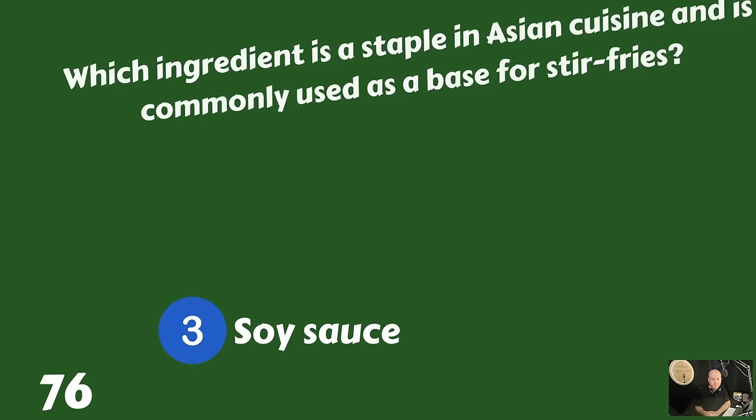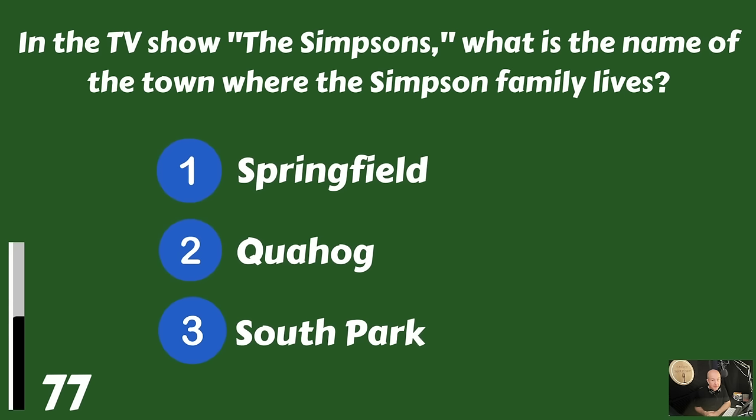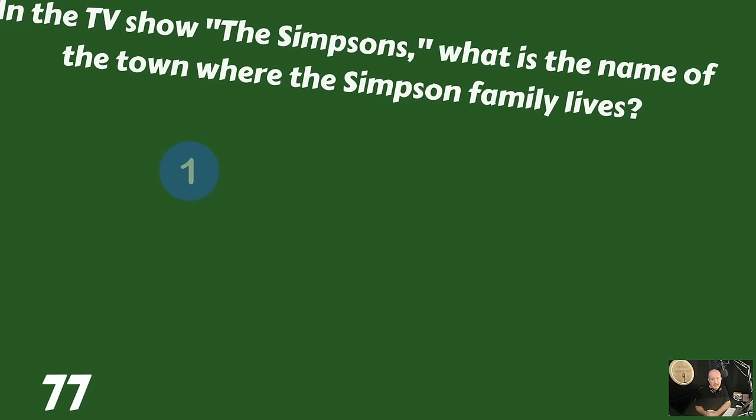In the TV show The Simpsons, what is the name of the town where the Simpson family lives? Springfield, Hoa Hog, or South Park? That takes place in Springfield.